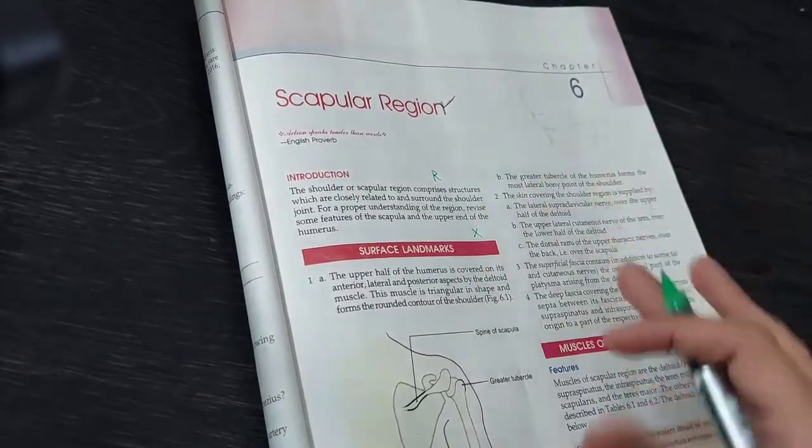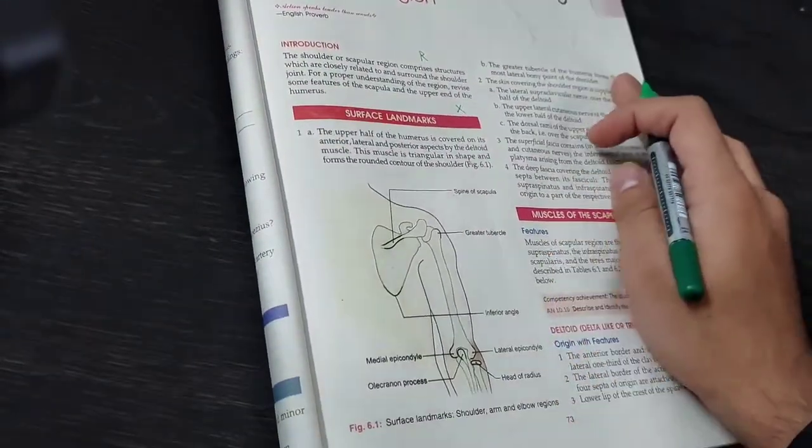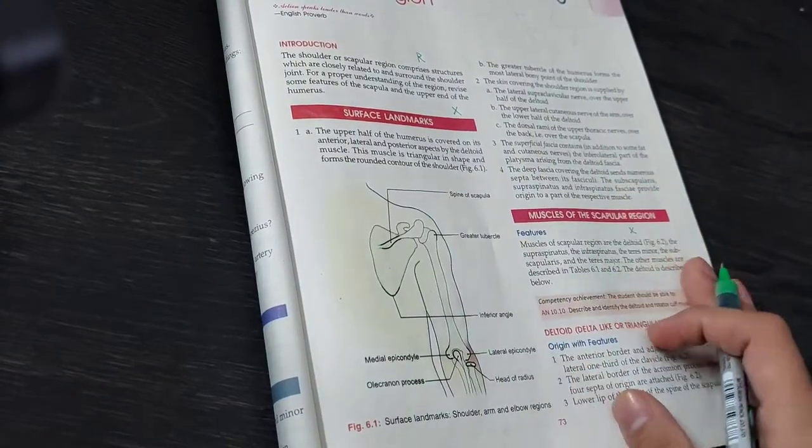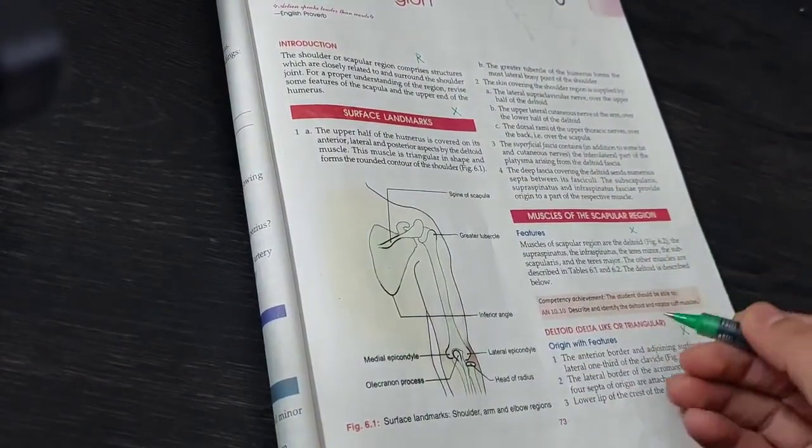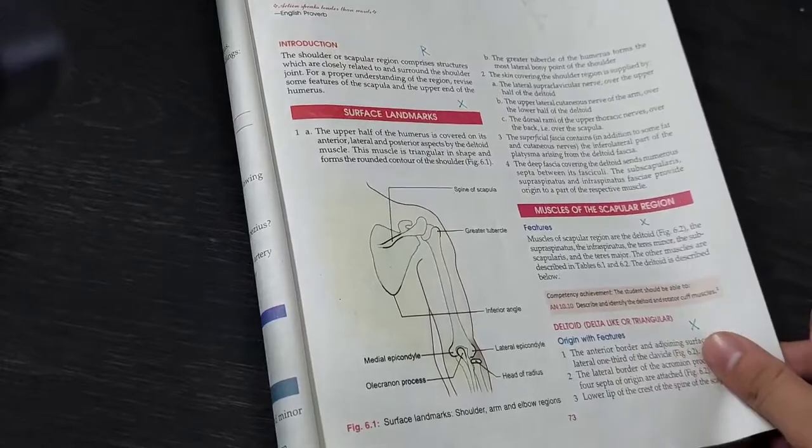Introduction just read. Surface landmarks here, cross or not. After that, muscles of the scapular region features, and we cross this paragraph.